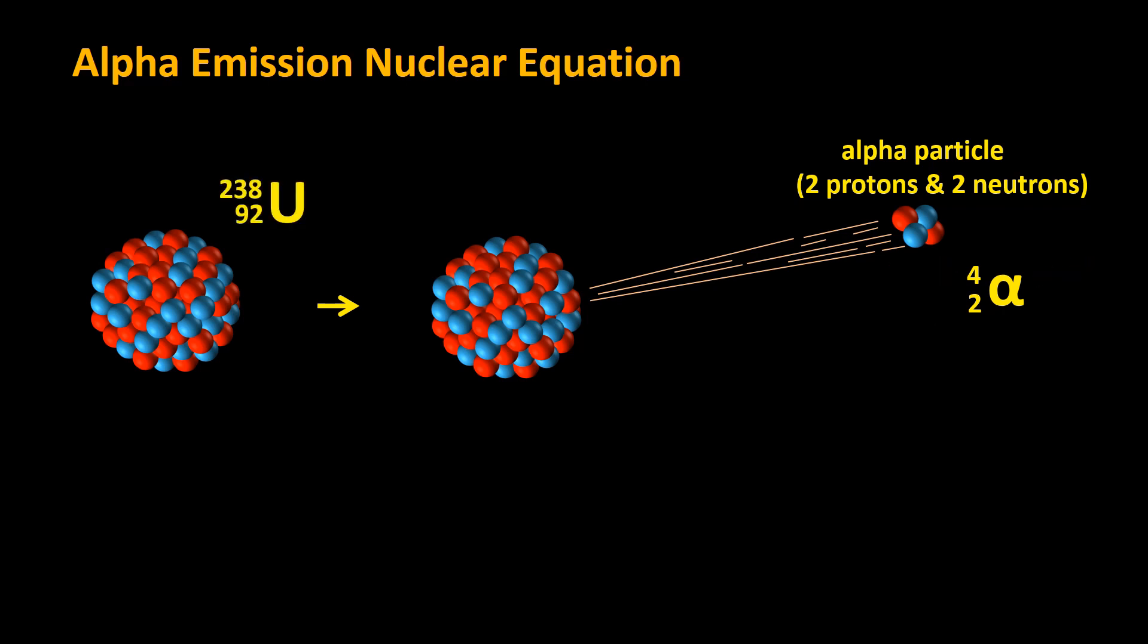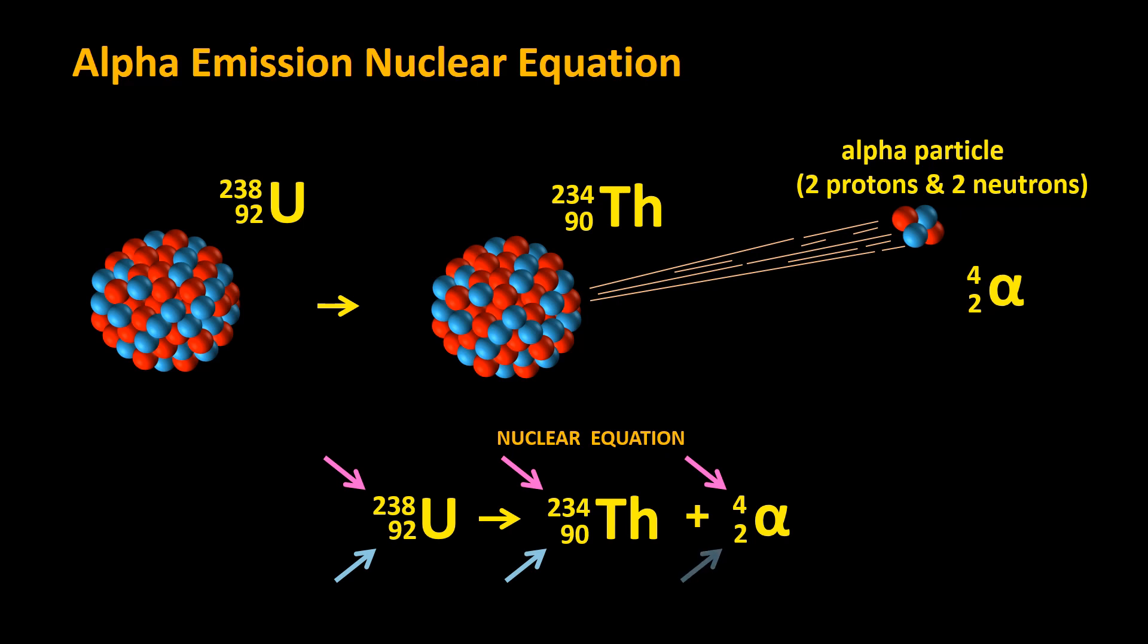The uranium atom, having lost two protons, changes into an atom with only 90 protons—that is, a thorium atom. Having lost four nucleons, there are only 234 nucleons left, so its mass number reduces to 234. The new atom can be written in atomic notation as 234-90-Th. We can put all this information together in a single nuclear equation: 238-92-U turns into 234-90-Th plus 4-2-alpha. It's pretty easy to do the mathematics. Notice that 238 equals 234 plus 4, and that 92 equals 90 plus 2. Easy.